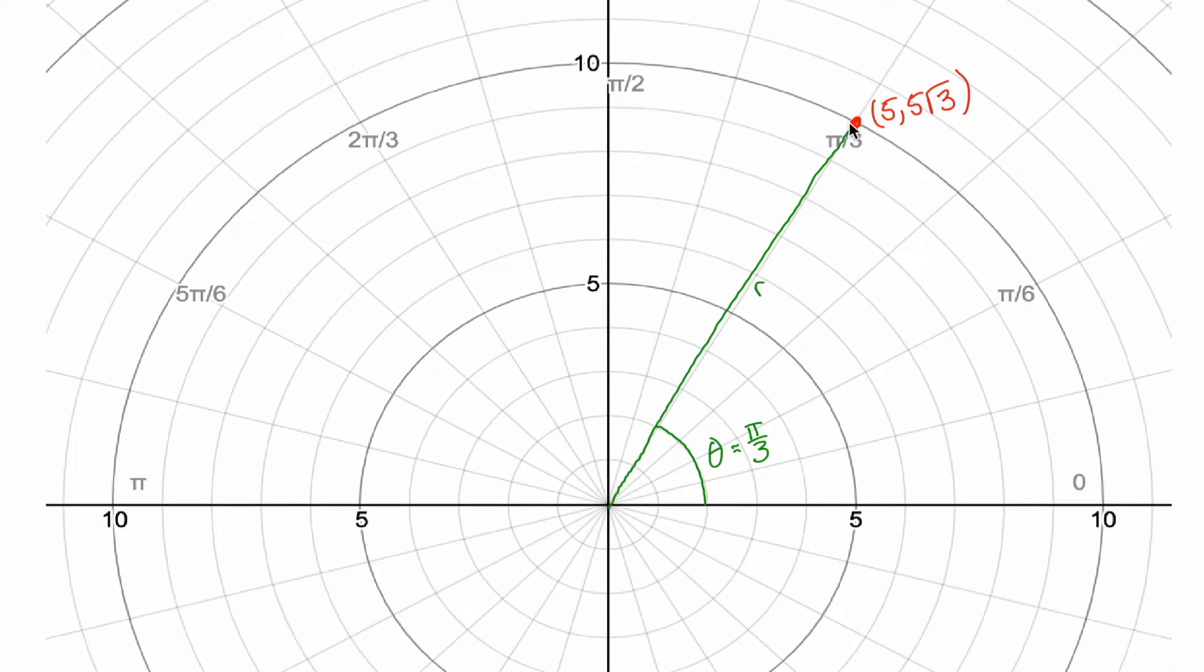And then if we traveled a distance of 10, we'd reach this point. Instead of calling this point 5 comma 5 root 3 by specifying its Cartesian or rectangular coordinates, we could call this point 10 comma pi over 3 by specifying its polar coordinates. The standard is to write the radius, in other words, the distance you'd have to travel in the direction that you specified first, and then the angle, which specifies the direction you're traveling second.